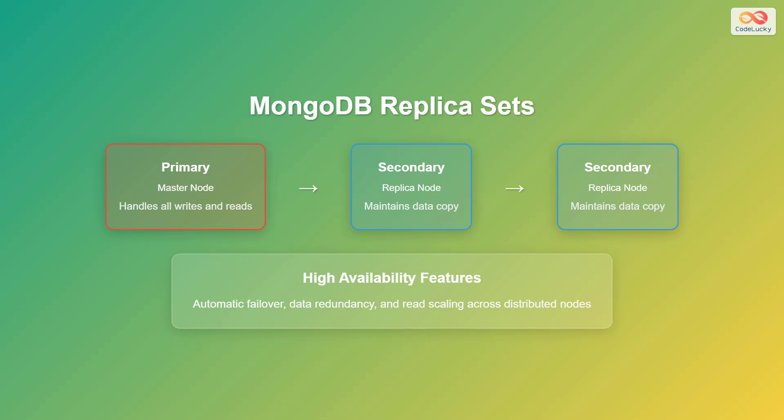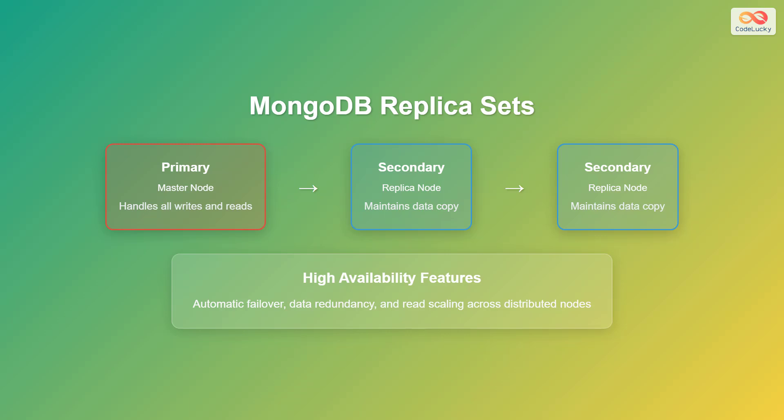Now let's discuss replica sets, which are a crucial component for ensuring high availability in MongoDB. In a replica set, the primary node, also known as the master node, handles all write and read operations. Data is then replicated to secondary nodes, or replica nodes, to maintain data copies. This setup offers automatic failover — if the primary node fails, one of the secondaries is automatically elected as the new primary. This process ensures data redundancy and enables read scaling across distributed nodes.